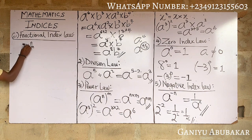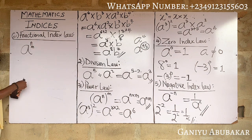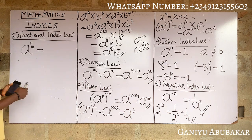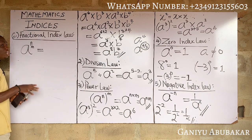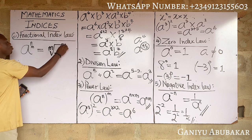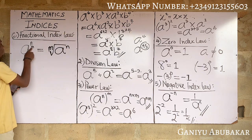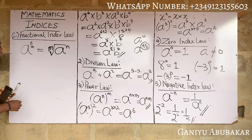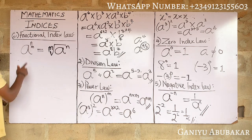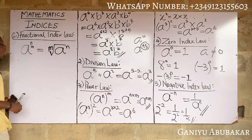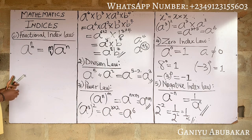So a^(n/m) becomes the m-th root of a^n. The denominator comes down as the root: the m-th root of a to the power n. That's the mathematical expression for the Fractional Index Law. Let's take a few examples to further understand this concept.